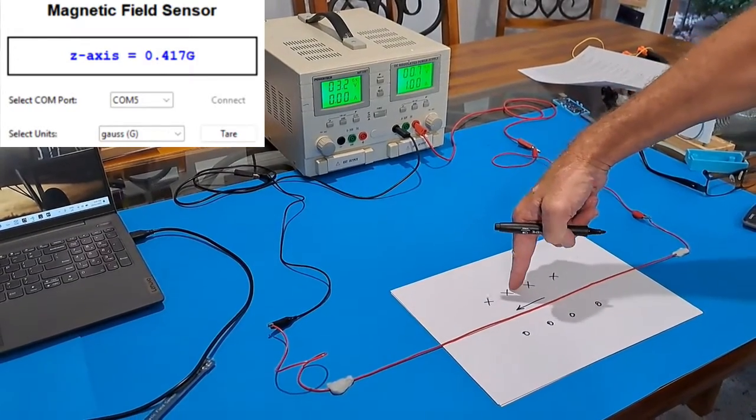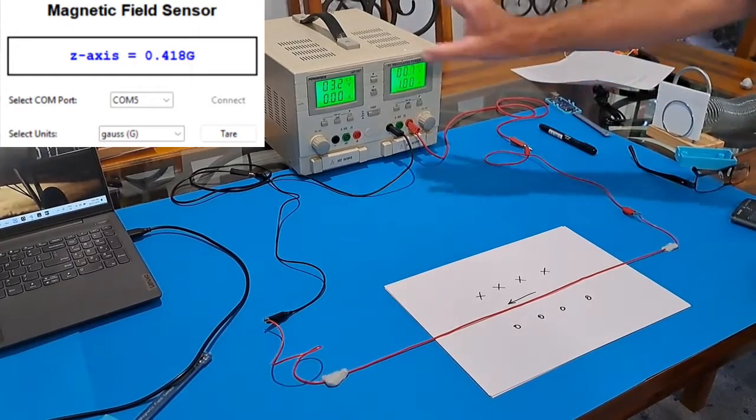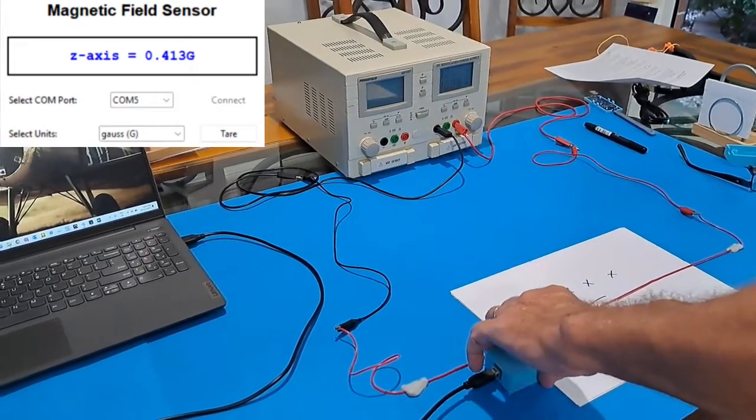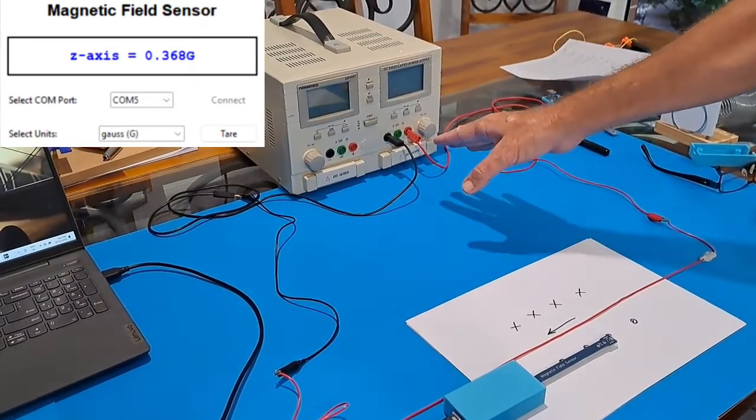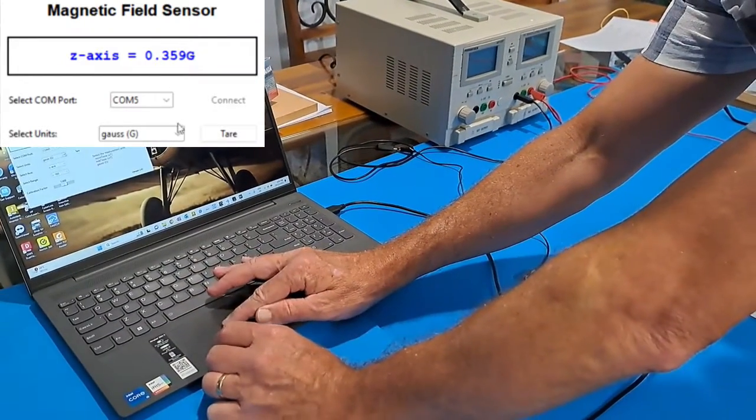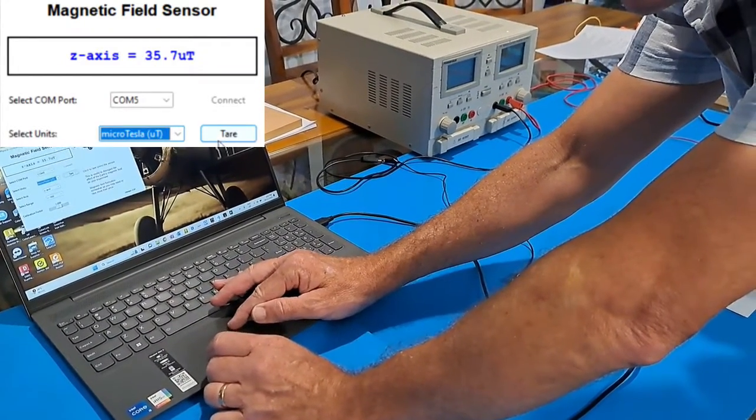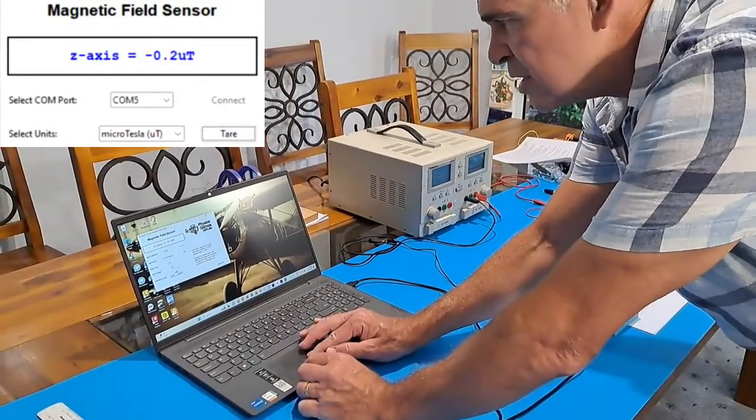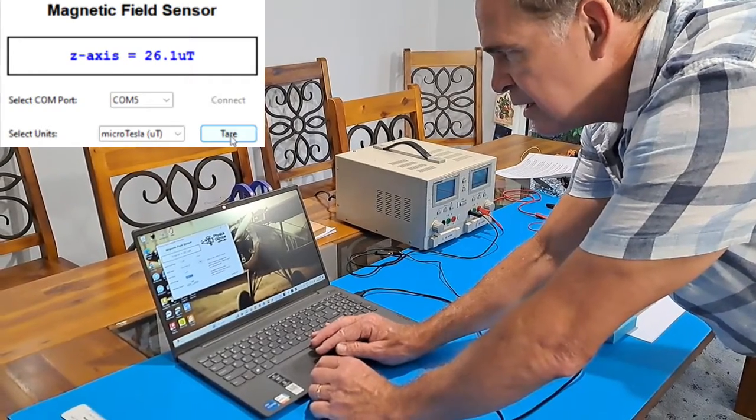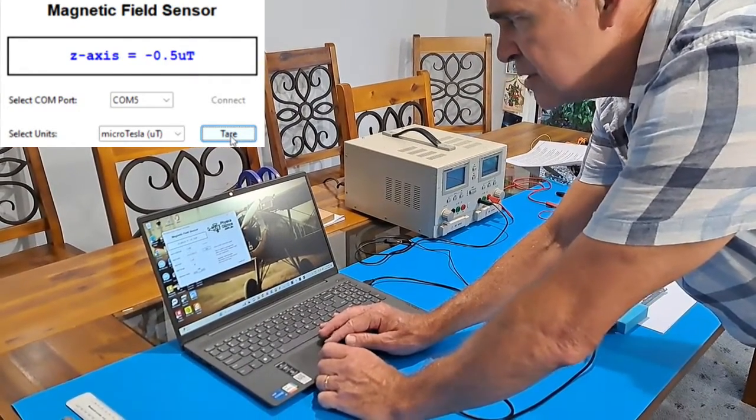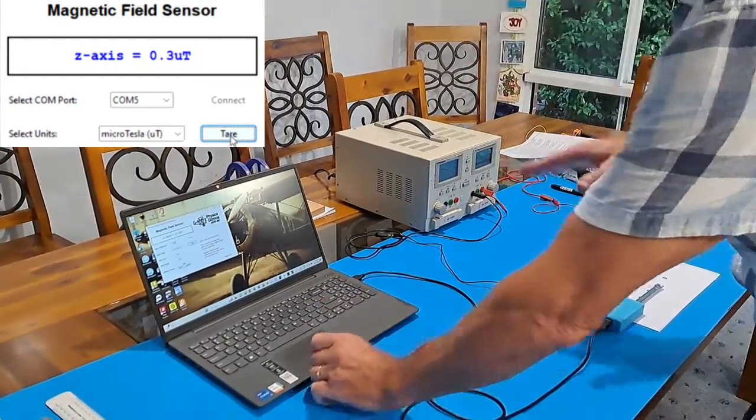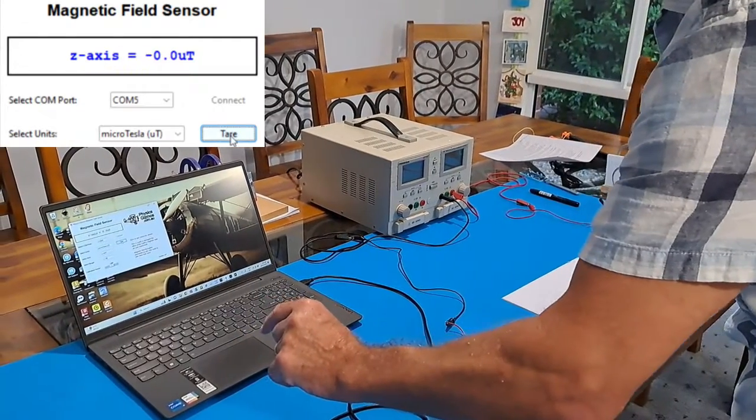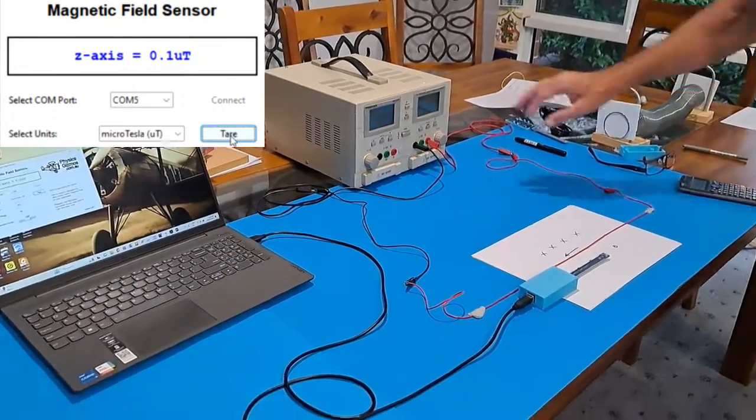So let's just have a look. I'm going to turn my current off for a minute and place my device there. With the current off, I'm going to tare. Actually, I'm going to put it into microtesla. And I'm going to tare my sensor. I want this to be pretty sensitive, so I'm going to go plus or minus 4 gauss. Tare it again. That's pretty good. You'll find the magnetic field wanders a little bit. One more time. Okay, that's pretty close to zero. That's about as good as we'll get.